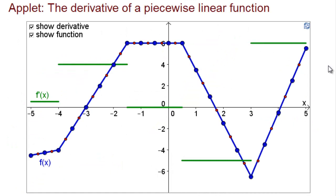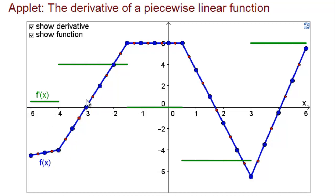This applet allows you to explore the derivative of a piecewise linear function and develop intuition about how the derivative works. The function f of x is plotted by the blue line, and its derivative f prime of x is plotted by the green line segments. Since f of x is piecewise linear, its derivative is constant on each piece. Over at the left, f is increasing slightly, so f prime of x is a small positive number. Then it increases a lot faster, so f prime is a larger positive number. In the middle, f is constant, so its slope is zero and the derivative is zero in that region.